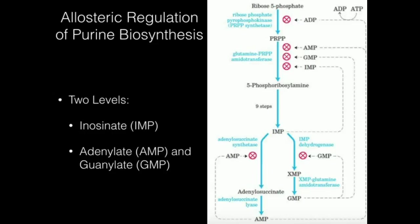We can also allosterically inhibit glutamine PRPP amidotransferase. It turns out that all of the end products of this pathway inhibit PRPP amidotransferase. The IMP made at the end of this 10-step process can inhibit PRPP amidotransferase. But the final two end products downstream — AMP and GMP — can also inhibit glutamine PRPP amidotransferase. This makes sense because if I already have plenty of AMP or plenty of GMP floating around, that's an indication that I don't need to make any more.